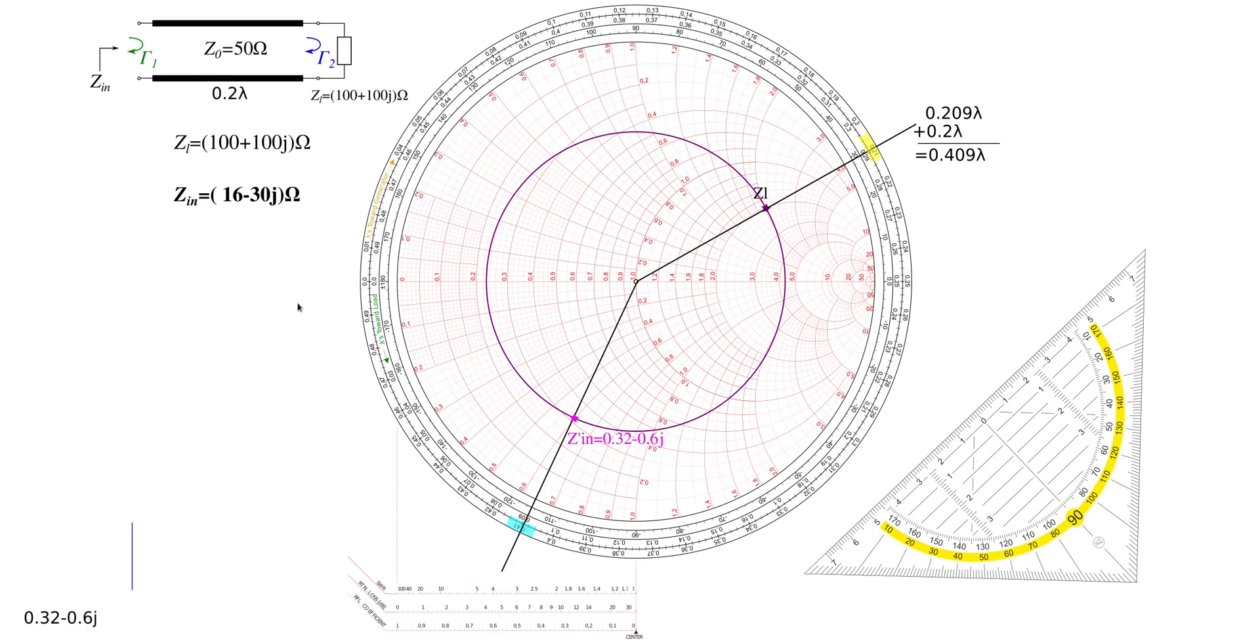So this rotation trick tells you how to derive the input impedance of a transmission line when it's loaded by a certain impedance. Once again: mark your load impedance, mark your starting point at the outer ring, add the length of the line, rotate by the length of the line to the new point, read off the new Z value. And that's it.